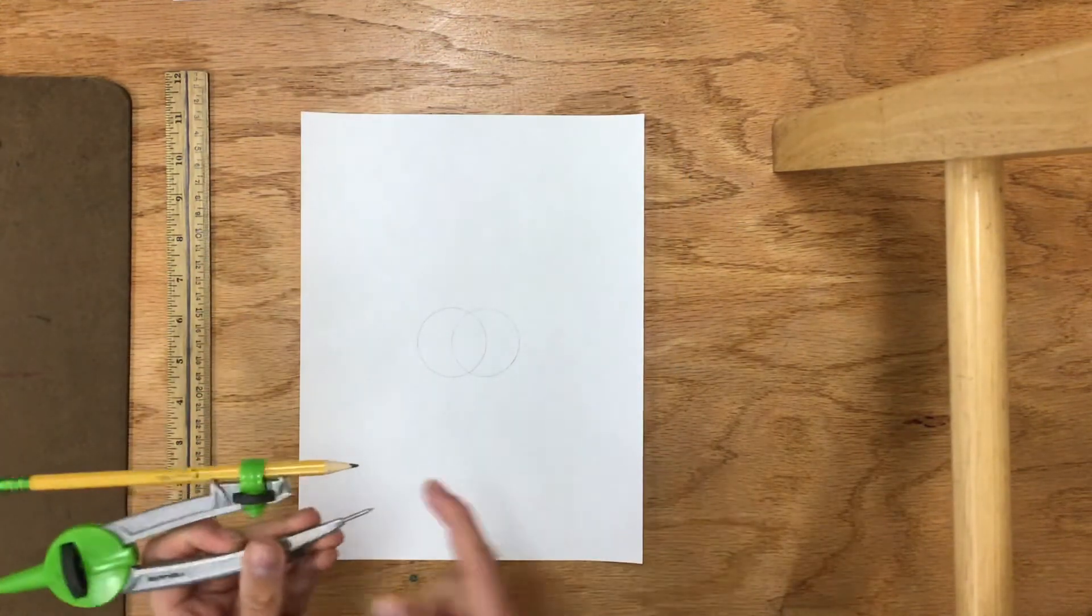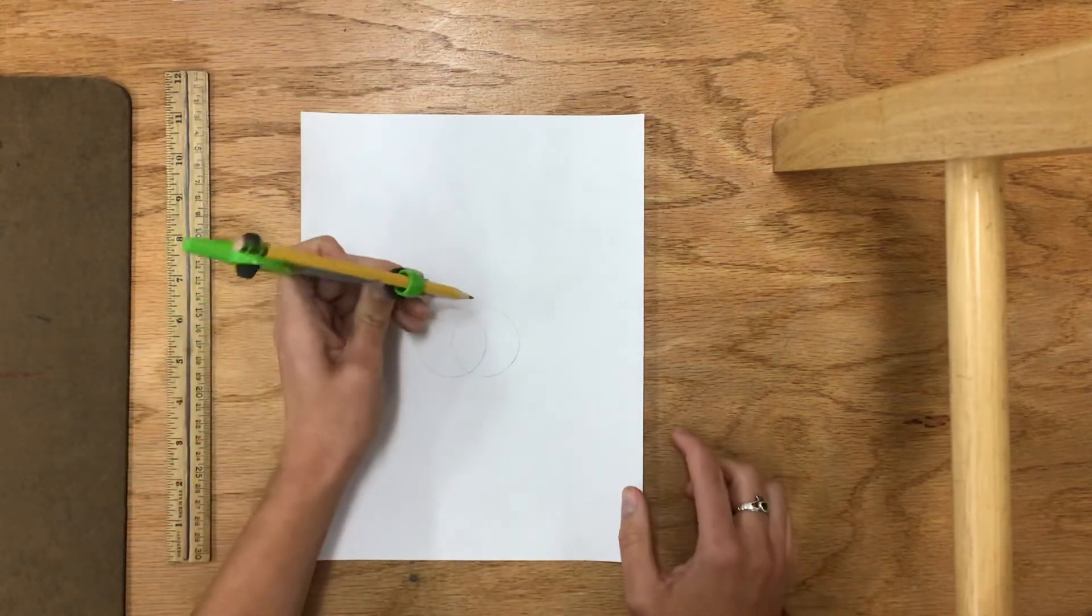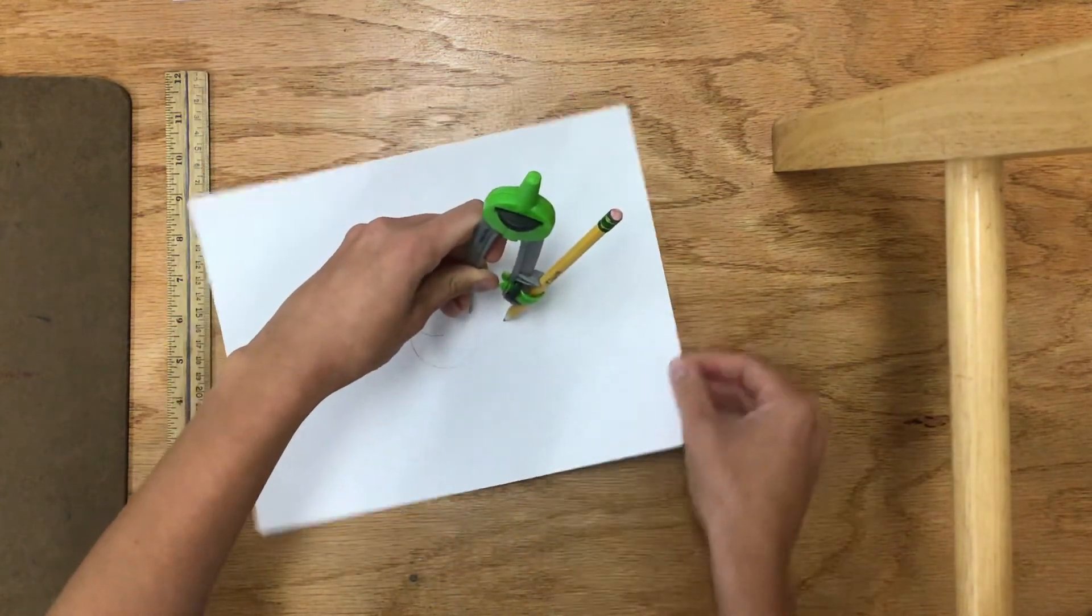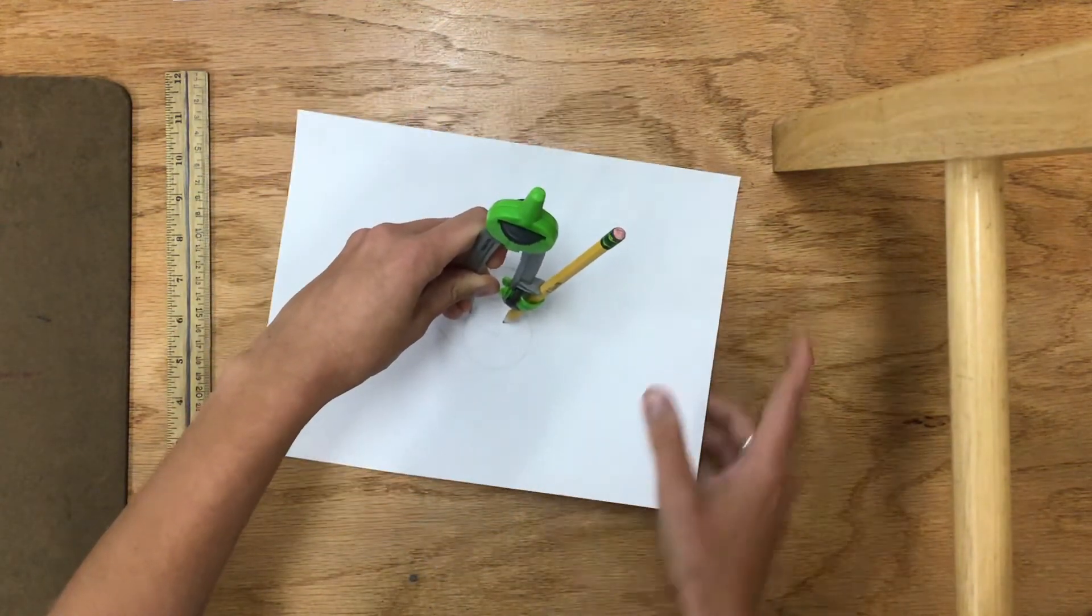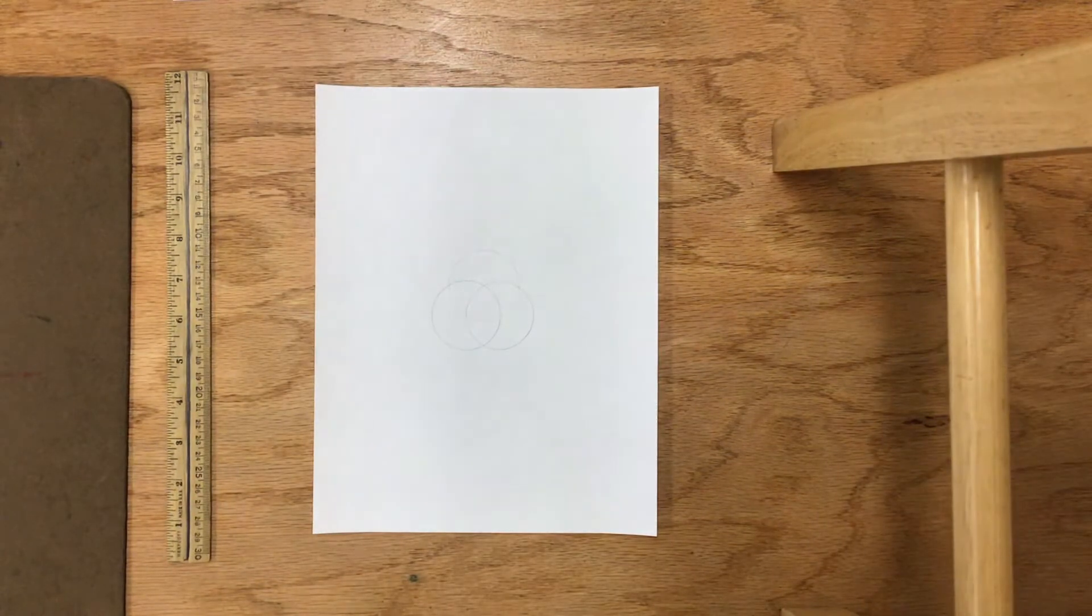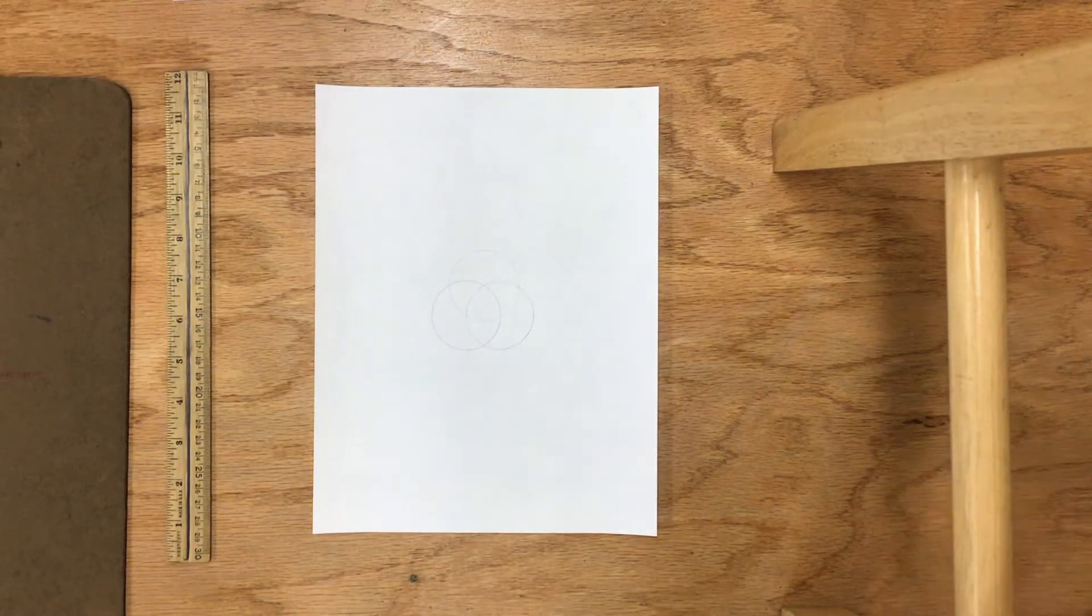Then I'm going to put the point of my compass on where the two circles met. Ooh, that already looks kind of cool. I got a little trifecta going and you can keep going.